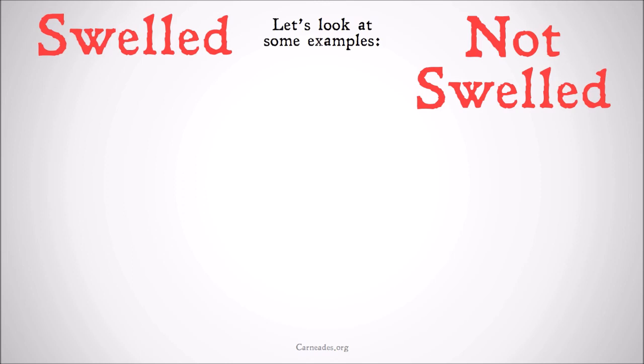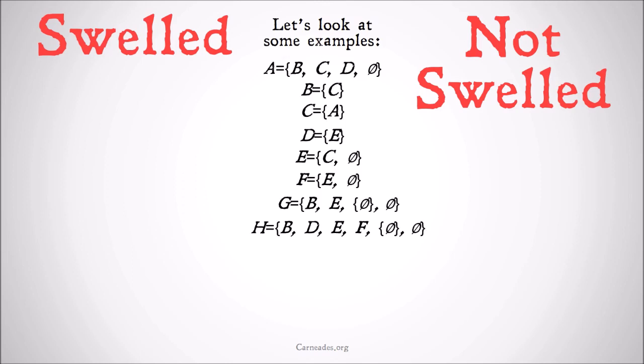Alright — swelled and not swelled. Let's look at some examples. We have a list here; as with transitive sets, if you want to pause right now and give these a try on your own I'd highly recommend it. We've defined explicitly all of these different sets, and the zero with a slash is just the null set or the empty set. To make this a bit easier, we'll also look at the subsets of each of the sets.